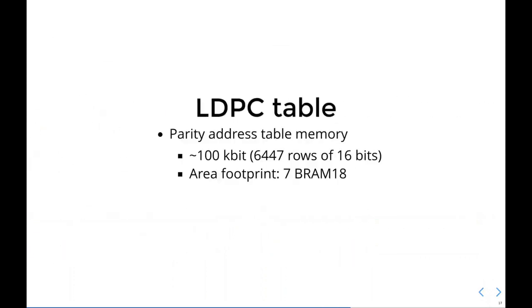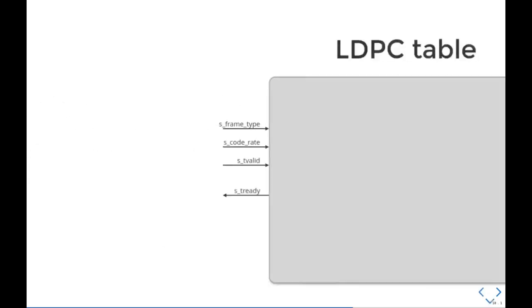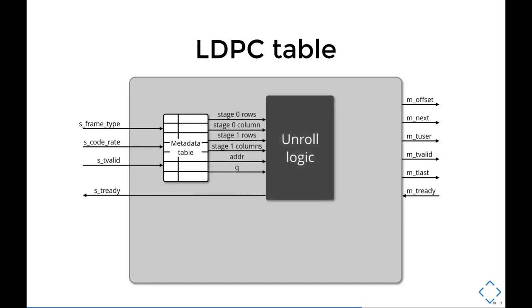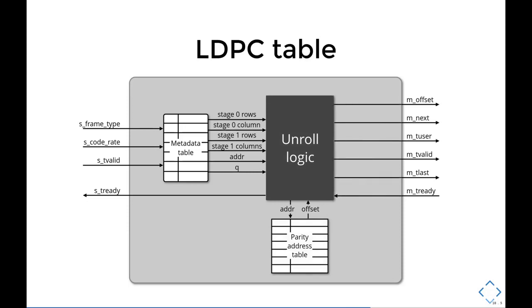In summary, the coefficients ROM has around 100 kilobits worth of data and it uses 7 block ROM 18 on Xilinx FPGA. The metadata memory is much smaller, only around 1 kilobit, and it will likely be mapped to lookup tables. Piecing everything together, frame type and code rate address the metadata table. The metadata table outputs the relevant info to the unroll logic. The unroll logic reads the parity address table to generate offsets for the LDPC core calculation. The unroll logic here is just a bunch of nested counters, so I'm not going to go into details.